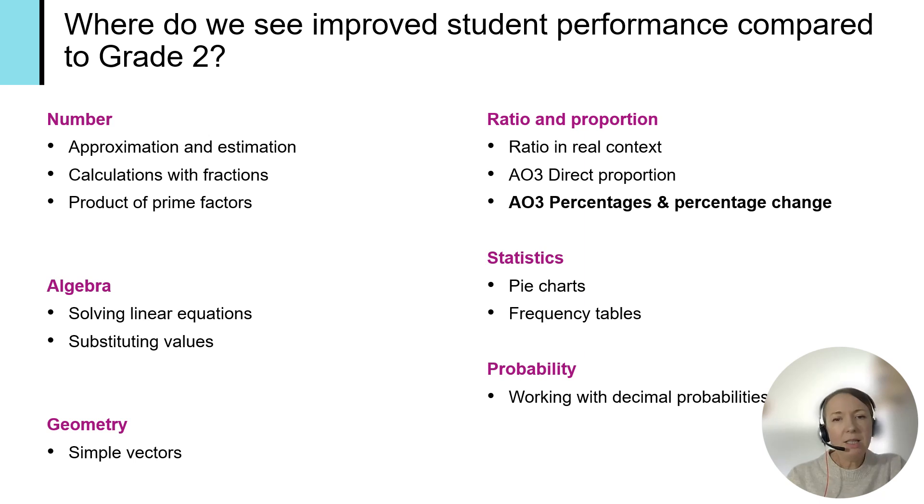On screen here we can see some areas where we see improved student performance at grade 3 compared to their grade 2 peers, and in bold you can see the AO3 percentages and percentage change. This is a really main area, one of the key areas, and we're going to look at some sample questions on the next slide.